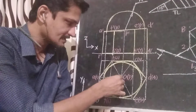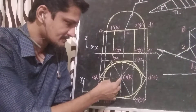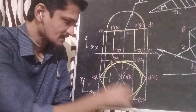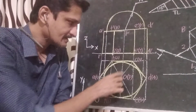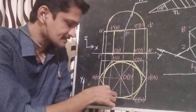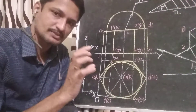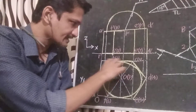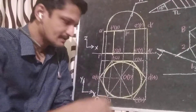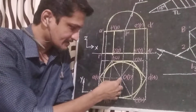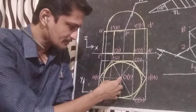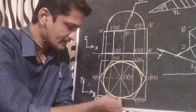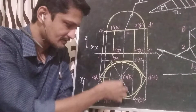We find the center by drawing corner-to-corner diagonals. We have the center point. We draw a horizontal line using a 2H pencil. This center gives us the base side, and from that we draw the circle.